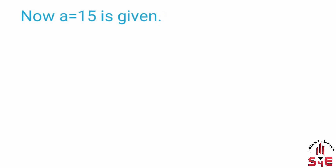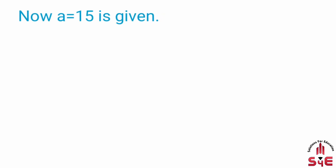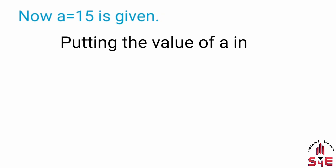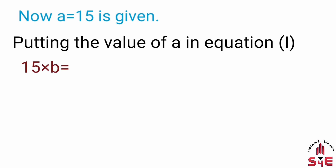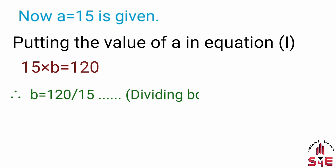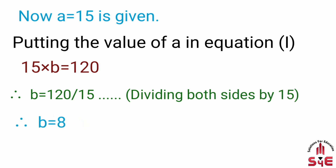Now a is equal to 15 is given, so putting the value of a in equation 1, we get 15 into b is equal to 120. So b is equal to 120 upon 15. 15 se divide karne par b is equal to 8 aayega.